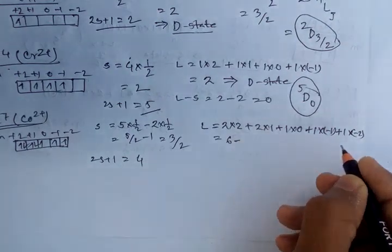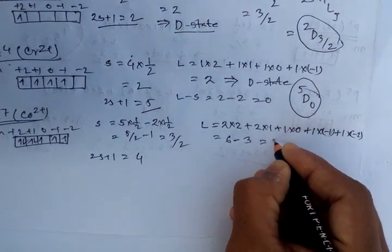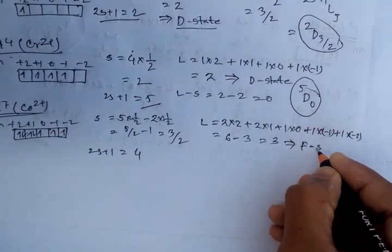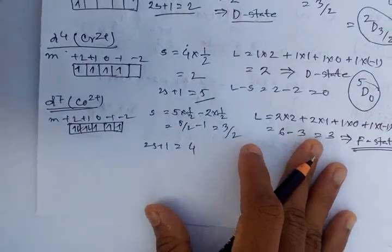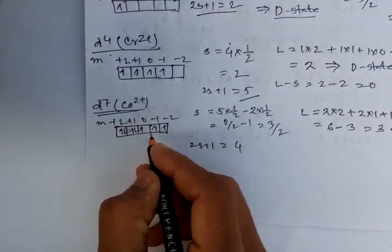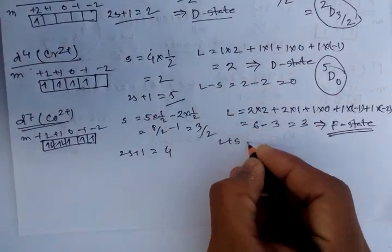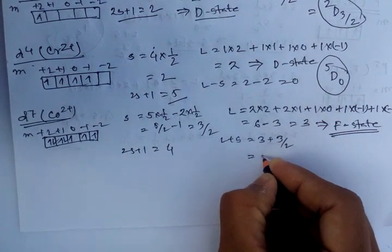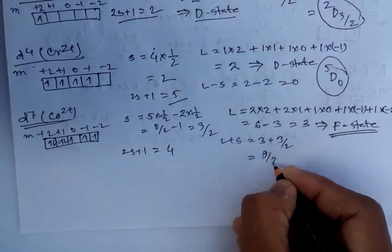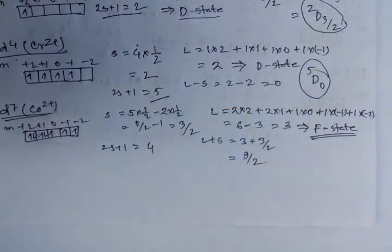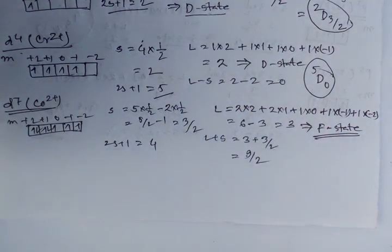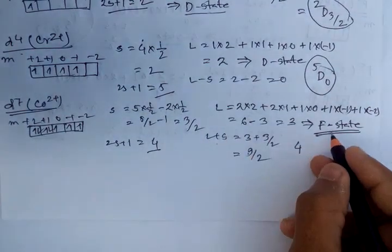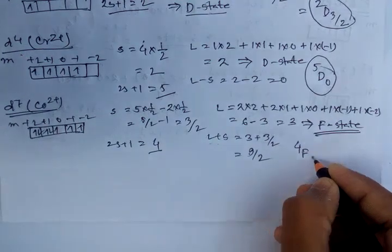The sum for L gives 6. Since 6 − 3 = 3, and L = 3 gives the F state. This orbital is more than half-filled, so we count J = L + S. L = 3 and S = 3/2, so J = L + S = 9/2. The ground energy state for the d⁷ system is 2S+1 = 4, L is the F state, and J = 9/2, giving ⁴F₉/₂.